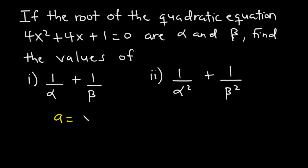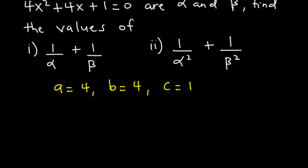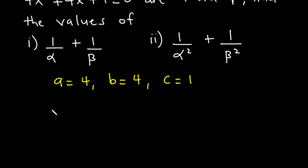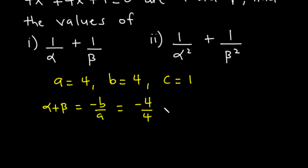From the equation, a is equal to 4, b is equal to 4, and c is equal to 1. We know that alpha plus beta equals negative b over a, which is negative 4 divided by 4, giving us negative 1.